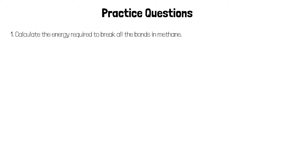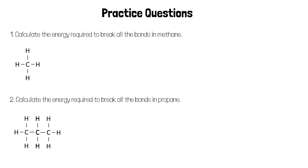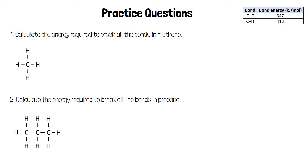Here are a couple of practice questions. Calculate the energy required to break all the bonds in methane and all the bonds in propane, using the bond energies table in the top right of the slide. In a molecule of methane, we have 4 carbon-hydrogen bonds. Each bond requires 413 kJ per mole to break, so to break all the bonds in a molecule of methane, we would need 1,652 kJ per mole.